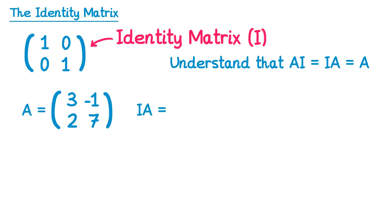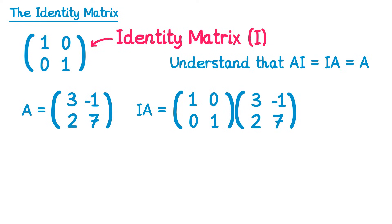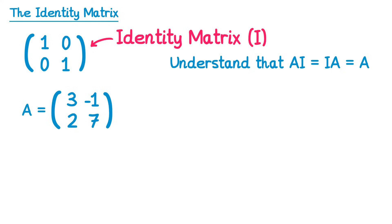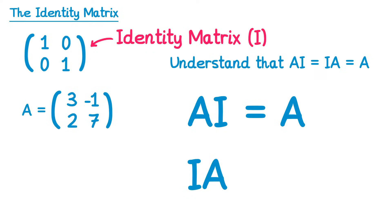What if we do it in the other order — I times A? We start with the identity matrix one, zero, zero, one, and multiply by our matrix three, negative one, two, seven. One, zero with three, two: one times three is three, zero times two is zero, giving three. One, zero with negative one, seven: one times negative one is negative one, zero times seven is zero, giving negative one. Zero, one with three, two: zero times three is zero, one times two is two. Zero, one with negative one, seven: zero times negative one is zero, one times seven is seven. So once again we get the same matrix A. Whether you multiply A by I or I by A, you get the same matrix back.